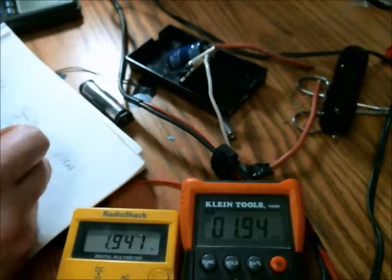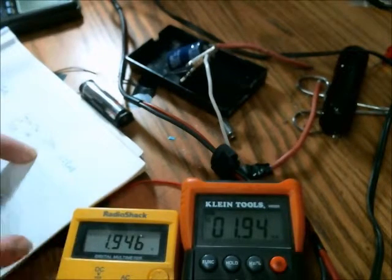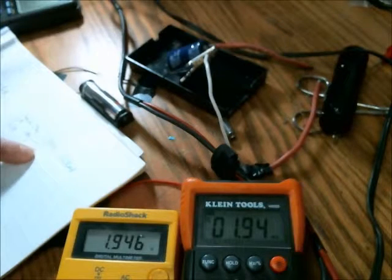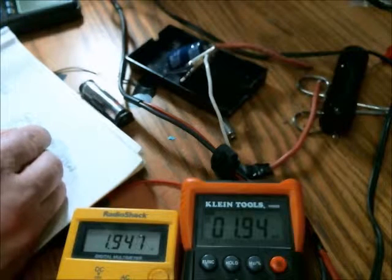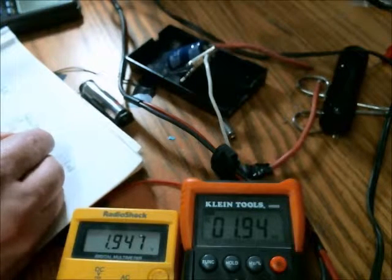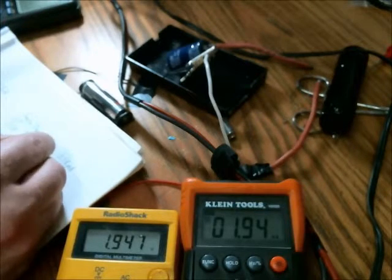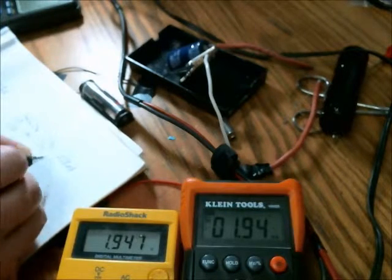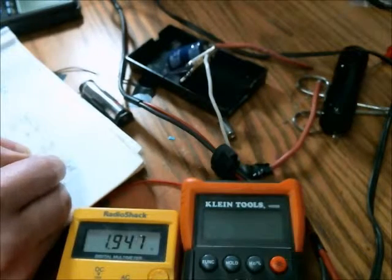So this is a compact fluorescent lamp at 13 watts, and it's been on long enough for the phosphors to have heated up, so this is at maximum luminescence, and the voltage is 1.947-ish, and the current is at 1.94 milliamps.